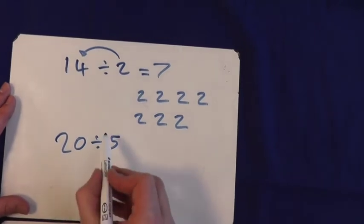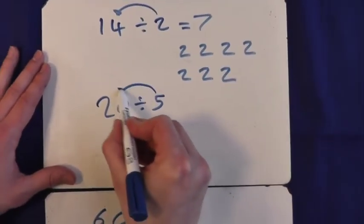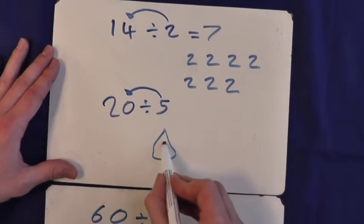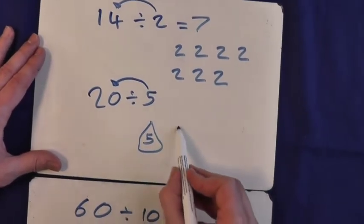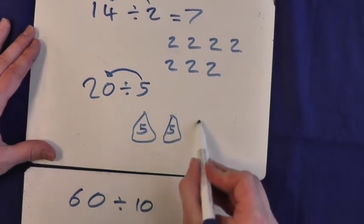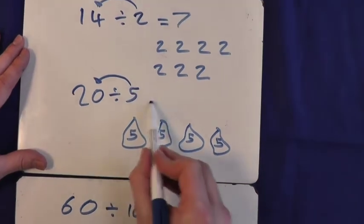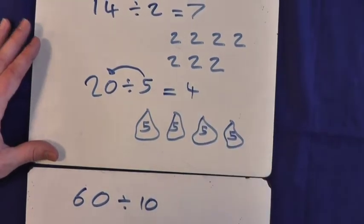20 divided by 5, we say, how many 5's make 20? Let's do our bags of fruit again. 5, 10, 15, 20. 4 bags. So 20 divided by 5 is 4.